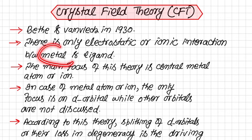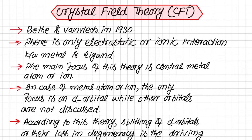The metal has a positive charge whereas the ligand has a negative charge, so both attract each other through electrostatic or ionic interaction. If a ligand is neutral, there are some elements which are more electronegative in nature, and due to that electronegative nature the ligand will still be attracted towards the metal.